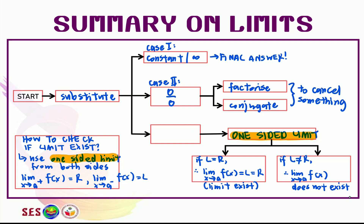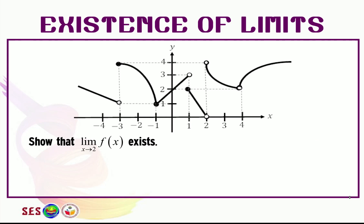Now let's see the first example. Let's go back to slide number 15. We've seen this graph in the previous video, and we already know how to find one-sided limits. Let's check the existence of the limit when x equals 2. To check whether the limit exists, we need one-sided limits from both sides. Let's find the limit as x approaches 2 from the right first. Focus at x equals 2 and the graph around it. Since we approach from the right, we go along that part of the graph, and the value is y equals 4. So the limit as x approaches 2 from the right is equal to 4.